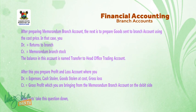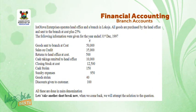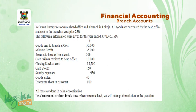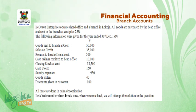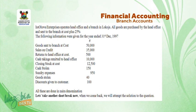Now let's take down this question. Lower Enterprises operates a head office and a branch in Lokoja. All goods are purchased by the head office and sent to the branch at cost plus 25 percent. The following information was given for the year ended 31st December 1997: goods sent to branch at cost ₦50,000; sales on credit ₦35,000; returns to head office at cost ₦500; cash takings remitted to head office ₦10,000; closing stock at cost ₦12,500; cash stolen ₦1,150; sundry expenses ₦950; goods stolen ₦40; discounts given to customers ₦100.